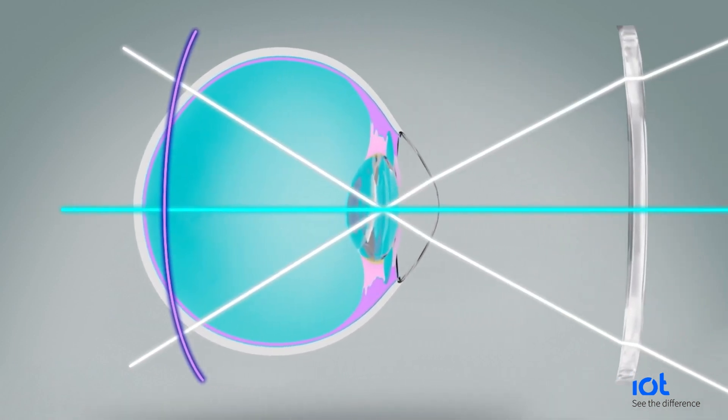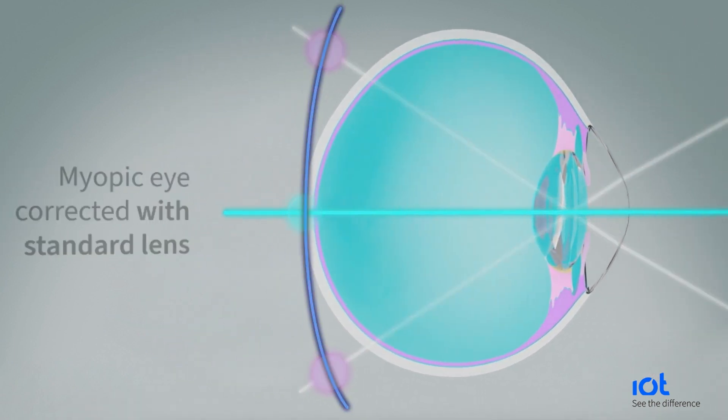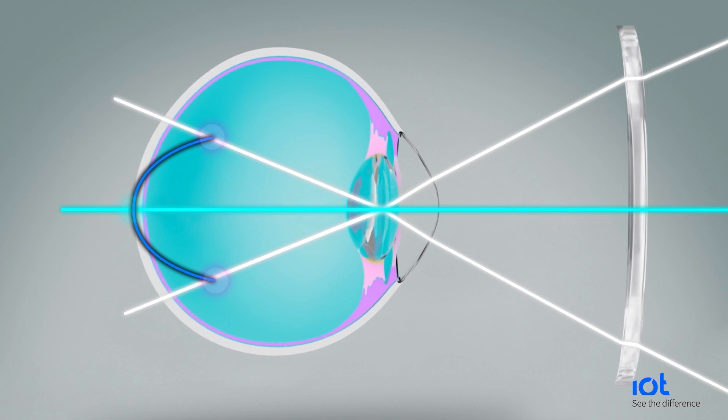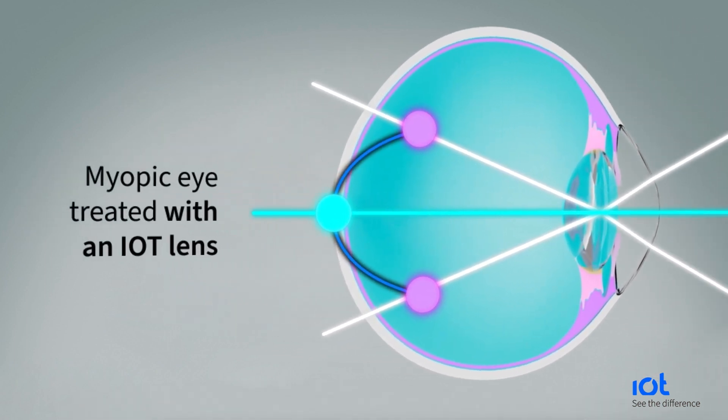Standard negative lenses cause light to focus behind the peripheral retinal plane. By introducing MyoFreeForm technology, we made sure that all peripheral spotlights are pointed in front of the retina.